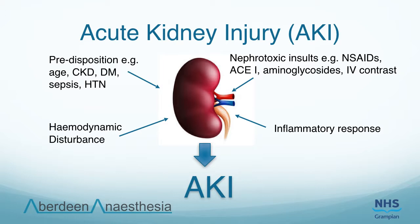Acute kidney injury (AKI) is a common problem in the perioperative period and has been shown to be an independent contributor to morbidity and mortality. Its development results from a complex interaction between predisposition, haemodynamic disturbance, nephrotoxic insults and inflammatory responses. There is no one specific treatment for AKI and its management depends on risk reduction, early detection and supportive measures. Risk factors include patient factors such as advanced age, cardiovascular disease, existing chronic kidney disease, hypertension and diabetes, and surgical factors such as type of surgery, emergency surgery, prolonged surgery and intraoperative blood loss. In such patients, maintain a high index of suspicion and monitor blood results and urine output. Management centres around careful fluid resuscitation, attention to fluid balance, maintenance of adequate blood pressure and avoidance of nephrotoxins.